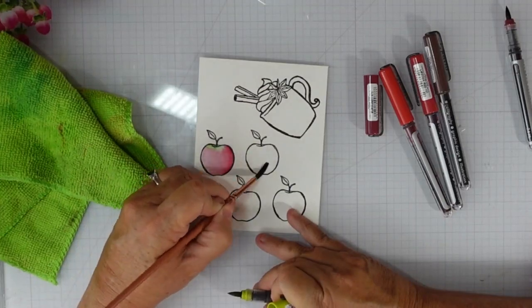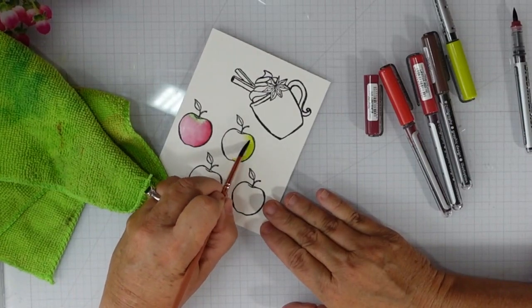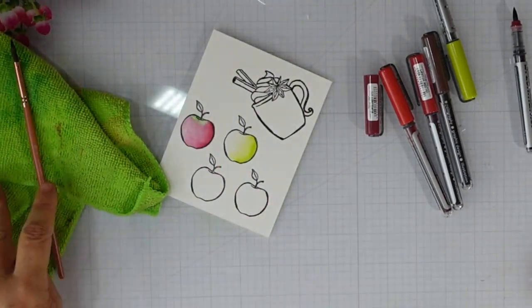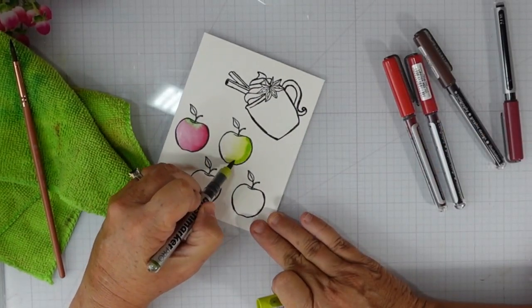For the green apple I'm going a little lighter with the water. I started with the apple color and I'm blending it out to the left, so you'll notice I'm very heavy with the color on the right hand side.